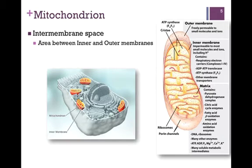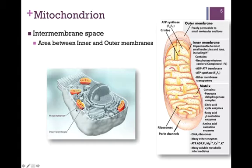Lastly, we have the intermembrane space. This is the area between the inner and outer membranes. Remember that the outer membrane is highly porous, which means that the concentration of metabolites within the intermembrane space is essentially the same as that of the cytosol. These mitochondria are individual organelles within the cell — we might have multiple mitochondria within a given cell, which function as more or less the batteries of the cell to give it the energy it needs to carry on its functions.